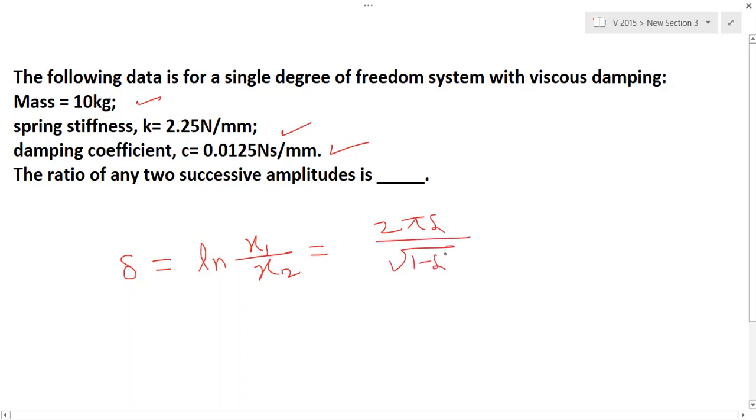Here damping coefficient c is given, so I have to find ξ value first. ξ = c/cc, where c is 0.0125. The critical damping formula cc = 2m×ωₙ, or 2√(km). So ξ = 0.0125 ÷ (2√(k×m)) = 0.0125 ÷ (2√(2.25×10)). After solving this, ξ equals 0.04167.